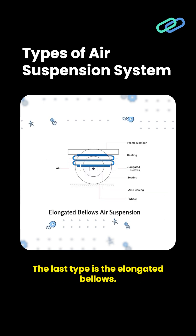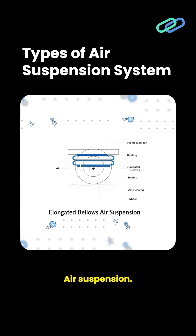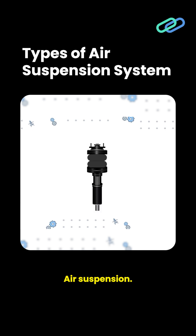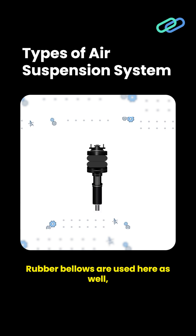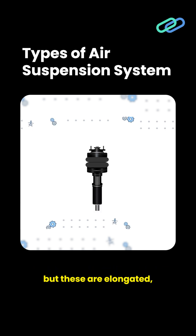The last type is the elongated bellows air suspension. Rubber bellows are used here as well, but these are elongated and rectangular in shape.